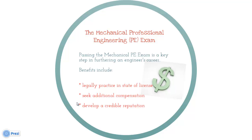But in order to obtain this license, the engineer must first meet the qualifications as required by the state of wanted licensure, including working a minimum amount of years under a registered professional engineer and obtaining a state-approved engineering degree. Check your state licensing board's website for the exact amount of years and education requirements.